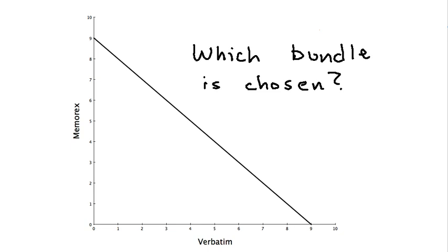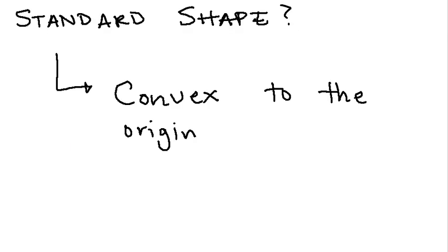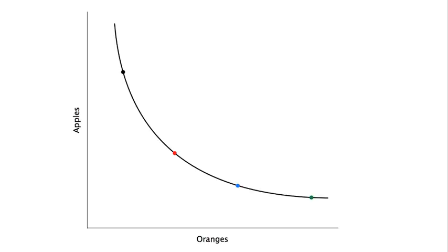Now, let's shift from our discussion of perfect complements and perfect substitutes and talk about normal indifference curves. So, the standard shape of a normal indifference curve is convex to the origin. Now, convexity has a very intricate mathematical meaning, but essentially, you can consider it as bulging towards the origin. So, this is easier to see when we look at a picture. Right here, we have a standard indifference curve. Convex, or bulging, towards the origin.